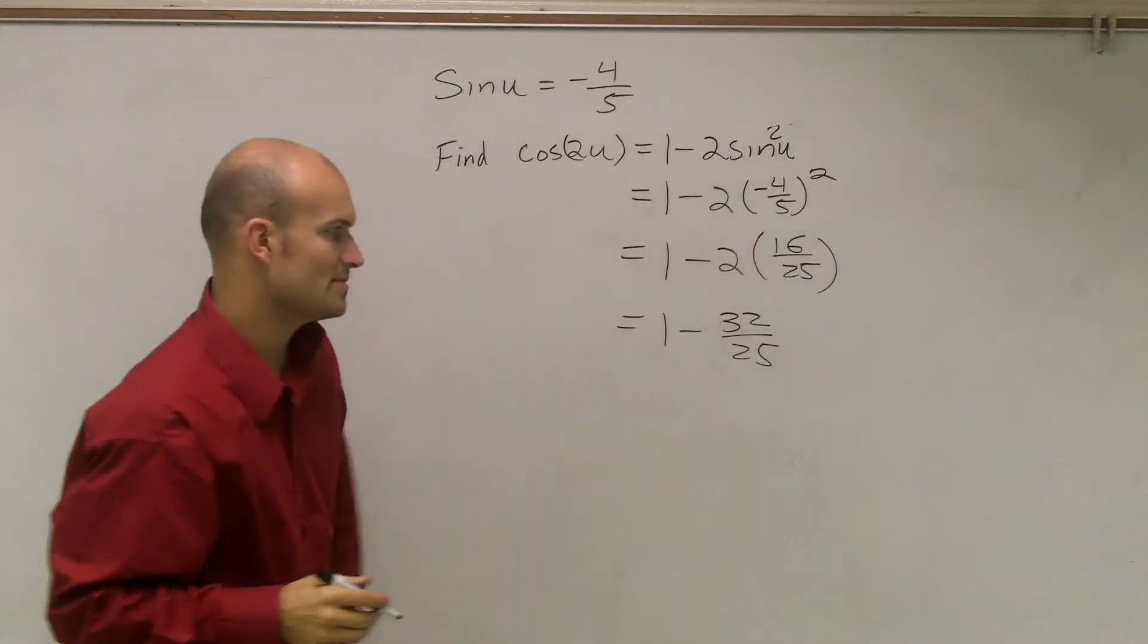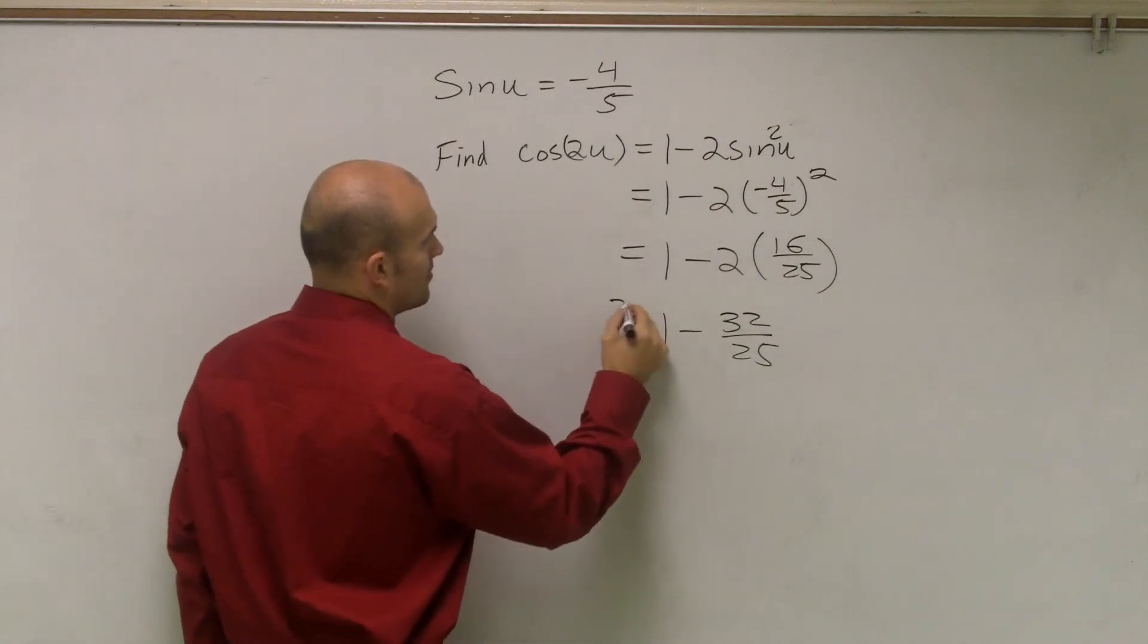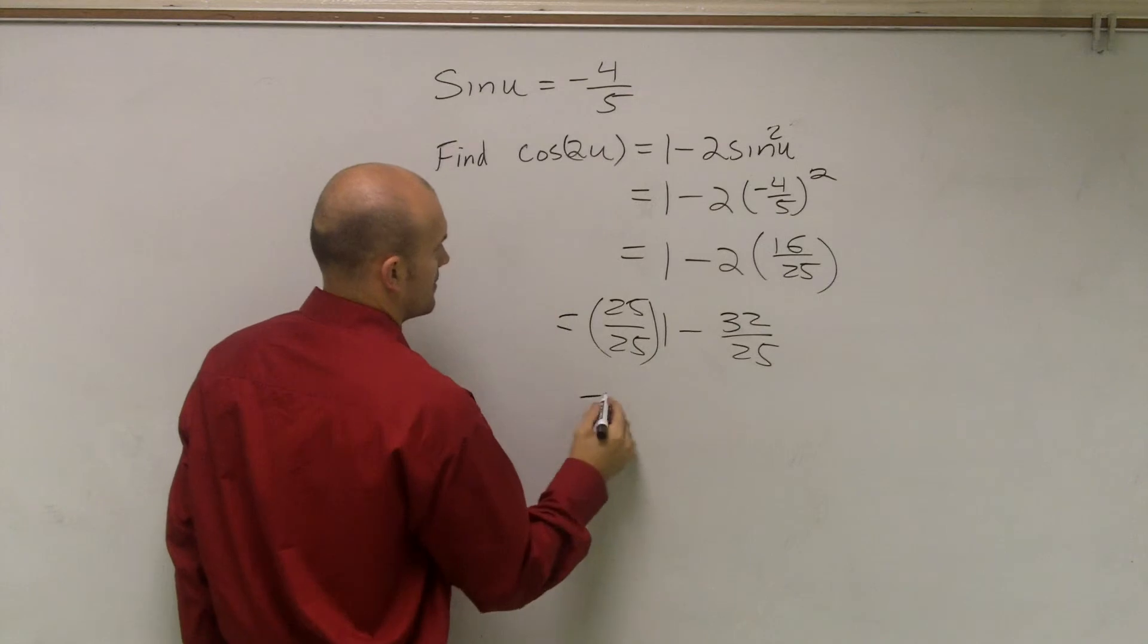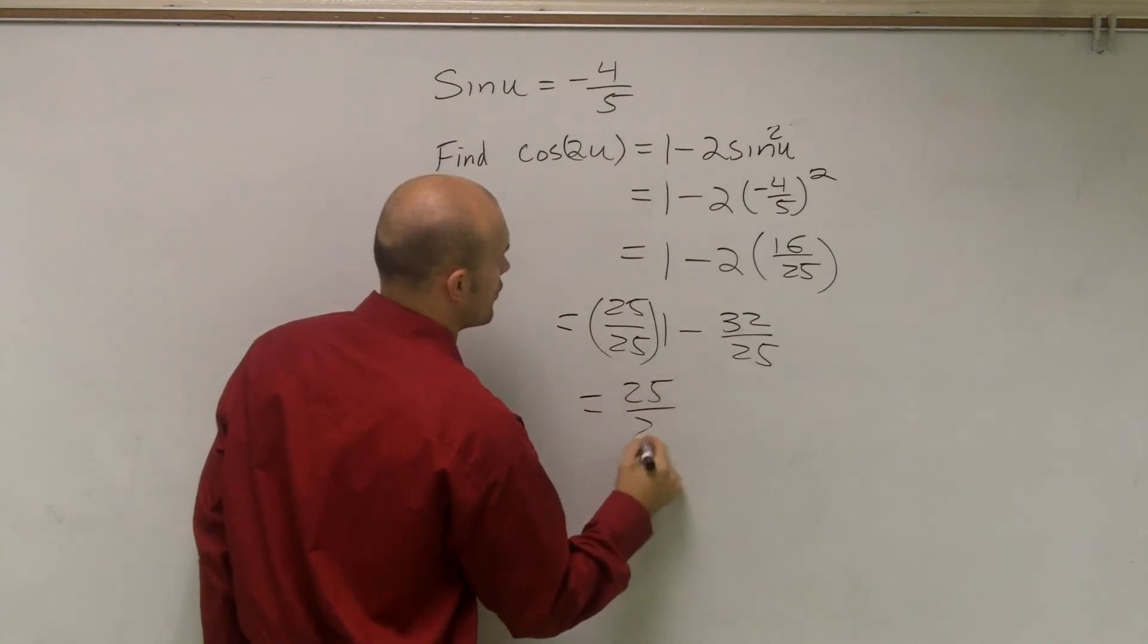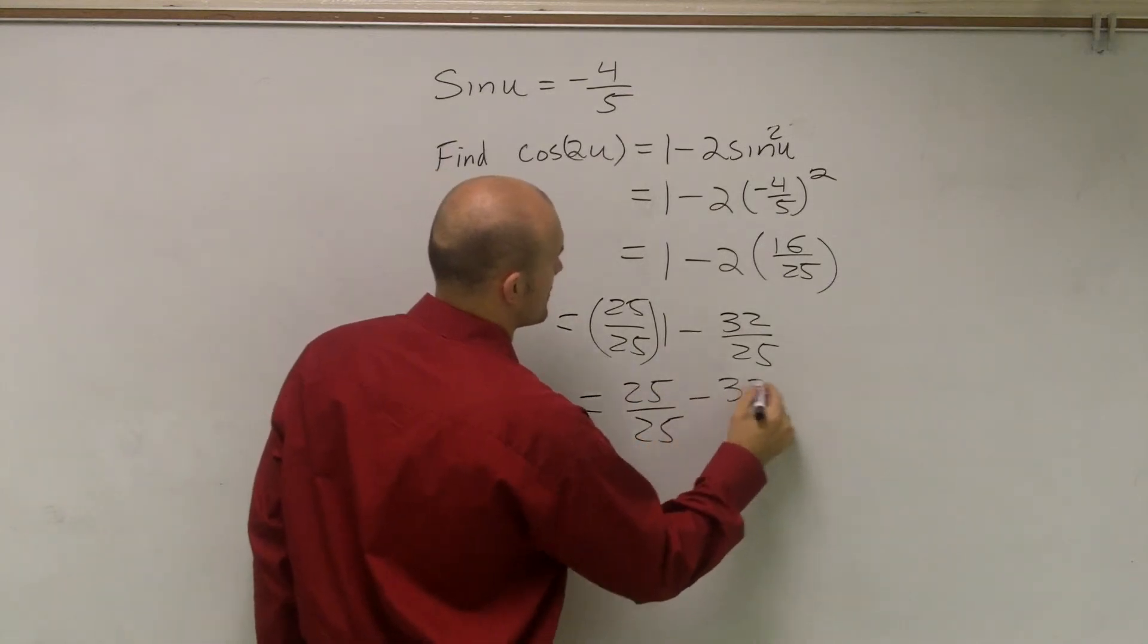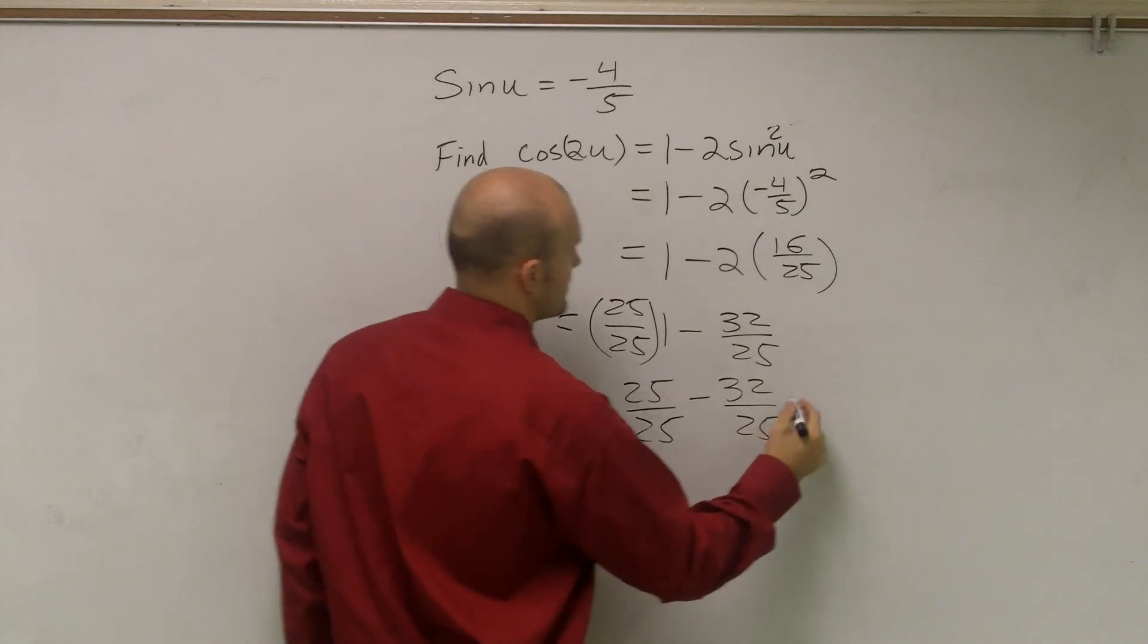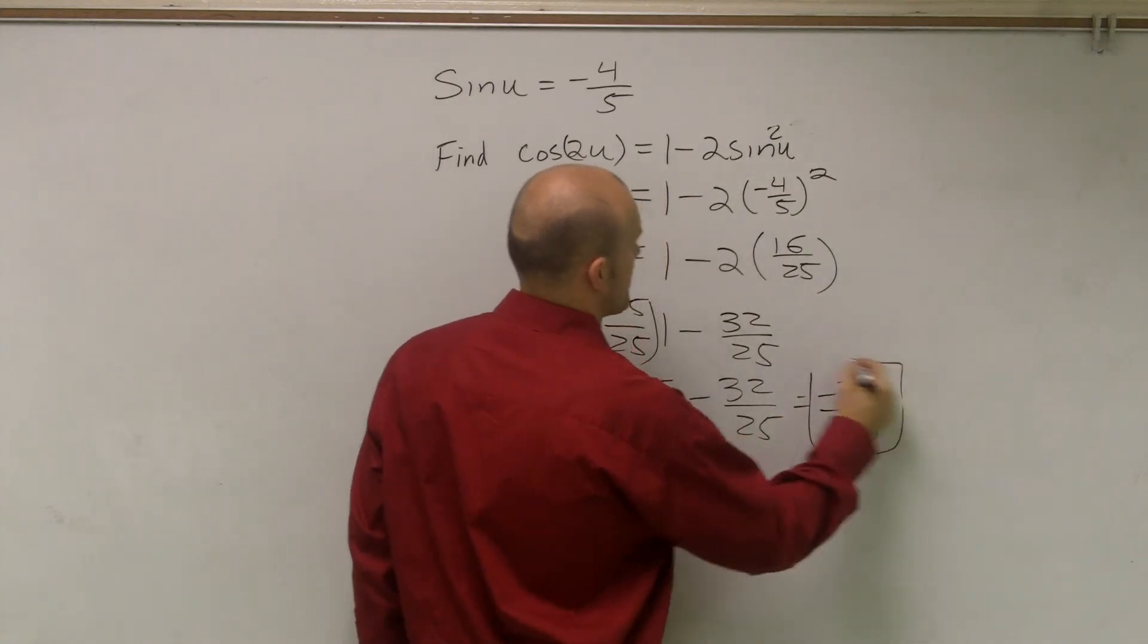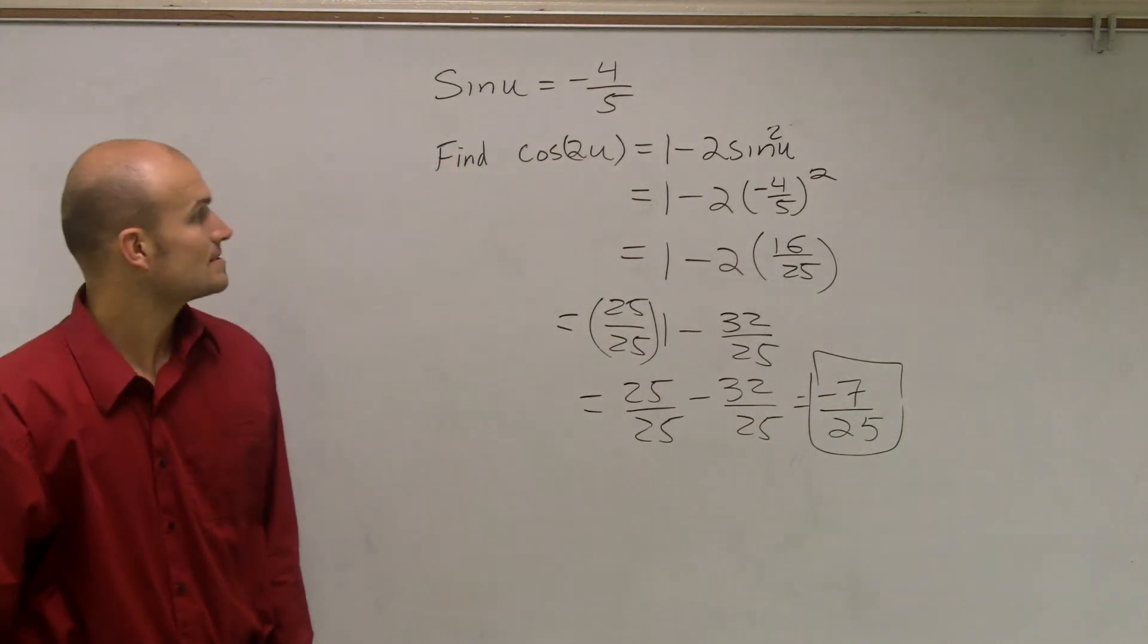Now I need to get them to be the same denominator, so I'll multiply by 25 over 25. Then I have 25 over 25 minus 32 over 25, which equals negative 7 over 25. And that's it.